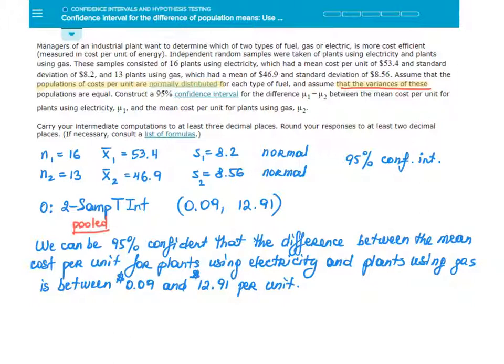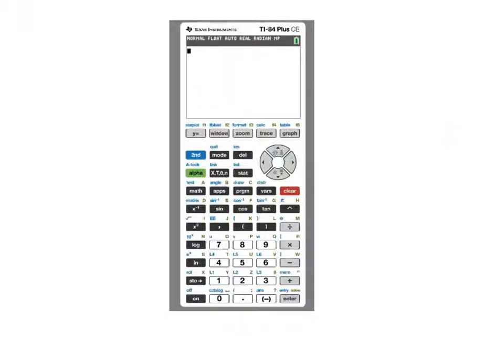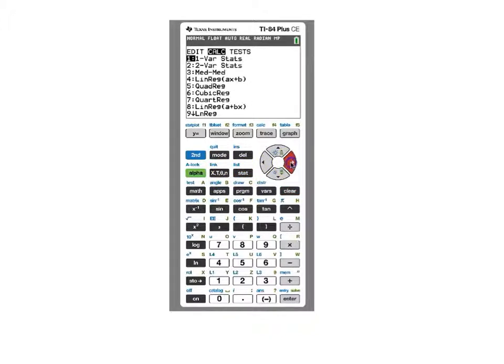Let's see how the calculator does this work and produces this interval for us. We go to stat, tests. We need option zero. You can scroll to that option or press zero. We are going to enter the information we had. First sample mean of 53.4 and a standard deviation for the first sample was 8.2. Sample size was 16.